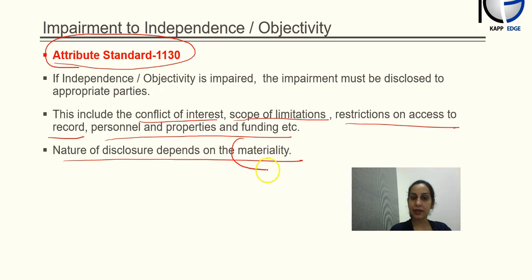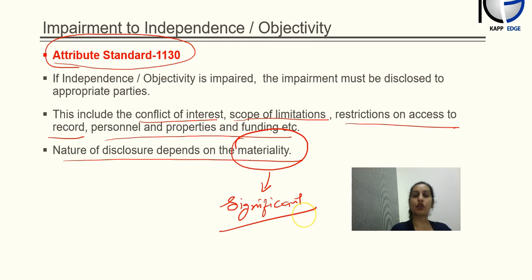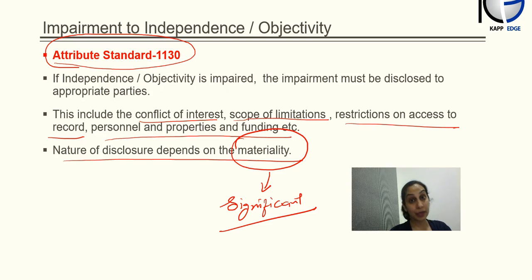Any kind of disclosure depends on the materiality. Materiality is a very important concept for audit — it means significance. How significant an item is determines whether it is material. Anything which impacts the decision of a user is called material. Materiality does not always mean monetary — even if it is small in value, if it may impact the decision of the user, we call that material. Materiality entirely decides what needs to be disclosed. But still, if you have any close relationship with a competitor, vendor, or supplier, it should be disclosed.